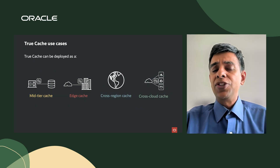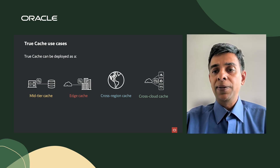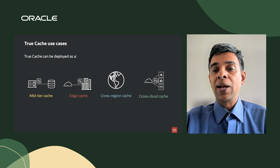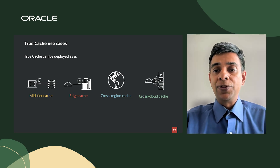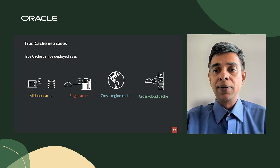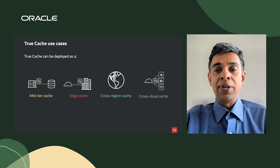True Cache use cases include: a mid-tier cache to help read performance; an edge cache for device or user proximity; a cross-region cache for data residency and data sovereignty regulations, keeping True Cache closer to wherever your application resides; and a cross-cloud cache for multi-cloud approaches. For example, if your database is in Oracle OCI but your application is on Oracle Azure, True Cache can be deployed on Oracle Azure, closer to your application.